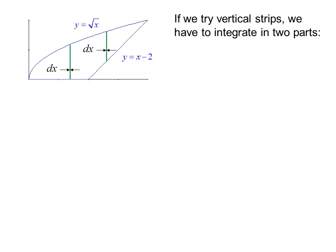Because if you look at this picture, the first strip runs from the x-axis to the parabola. But the second strip runs from a straight line to the parabola, so we'd have different limits of integration for each one.